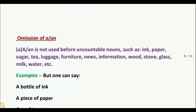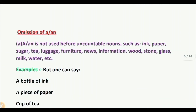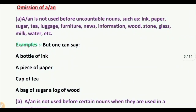Now we see the omission of article A or AN. We cannot use any article in some cases. A: A or AN is not used before uncountable nouns such as ink, paper, sugar, tea, luggage, furniture, news, information, wood, stone, glass, milk, water, etc. However, one can say 'a bottle of milk,' 'a piece of sugar,' 'a bottle of ink,' 'a piece of paper,' 'a cup of tea,' 'a bag of sugar.'